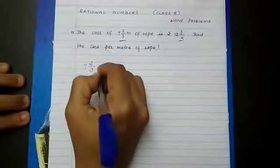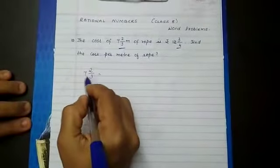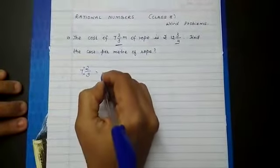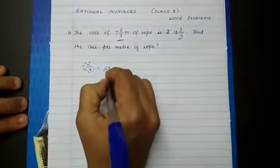So first let us convert this into improper fraction. 3 sevens are 21, 21 plus 2 is 23 by 3.